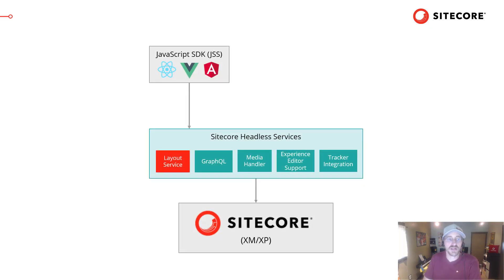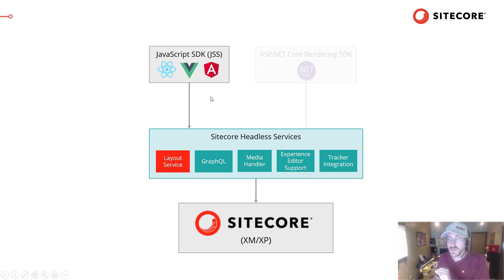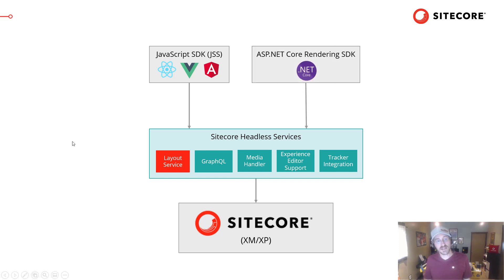Lastly, those of you who have worked with JSS are familiar with our headless development architecture and the services that support it, in particular the layout service. Today, we have JavaScript SDKs for React, Angular, and Vue, which allow you to consume those services and create independently running JavaScript rendering applications. With Sitecore 10, I'm delighted to announce a new headless rendering SDK, this time for ASP.NET Core, giving you the ability to finally develop Sitecore sites with .NET Core.